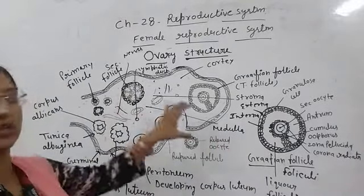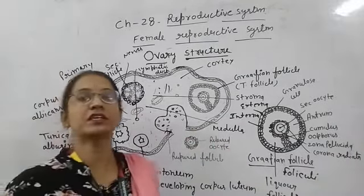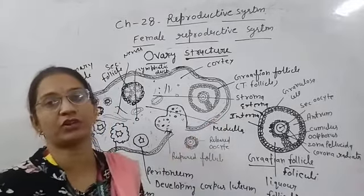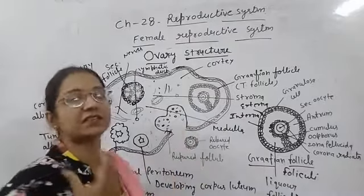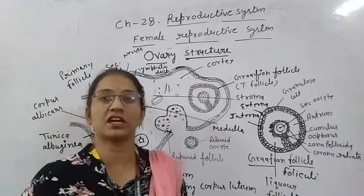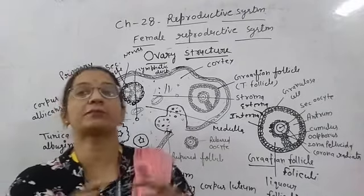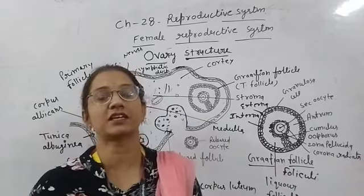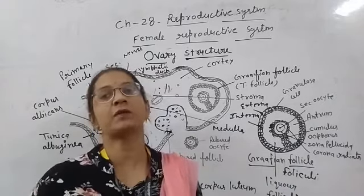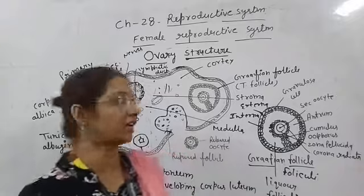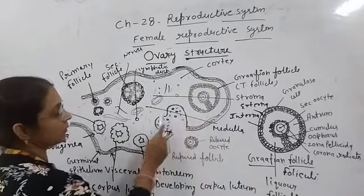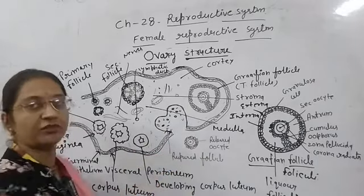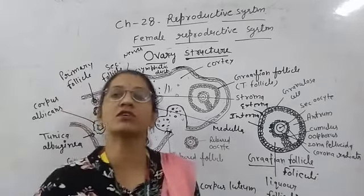So we can see the growth of the follicles: primary follicle changes into secondary follicle, secondary changes into tertiary follicle, and tertiary changes into the Graafian follicle. After this, the secondary oocyte is released. The follicle ruptures and the ovum is released — this process is called ovulation.